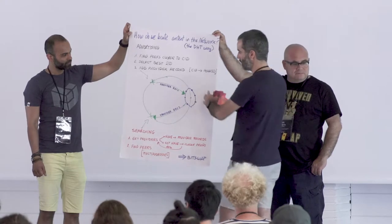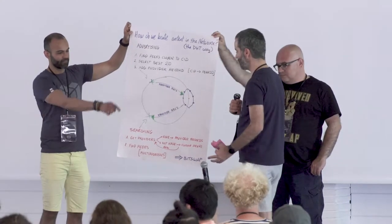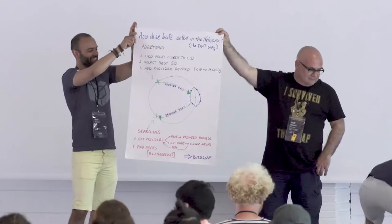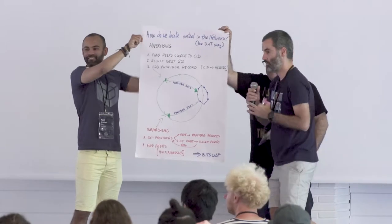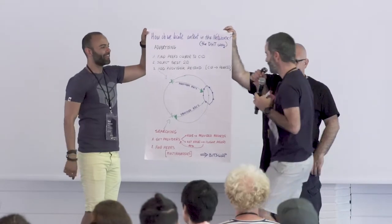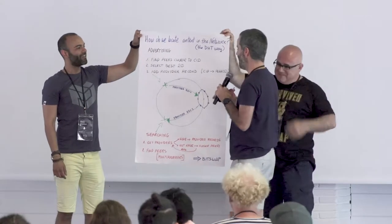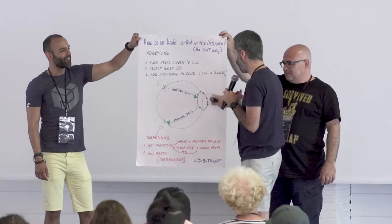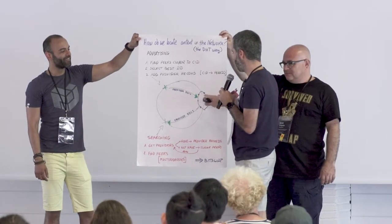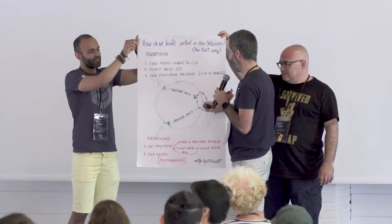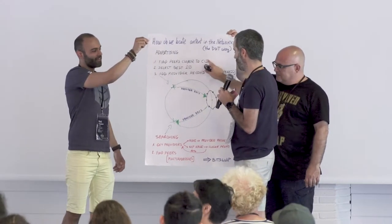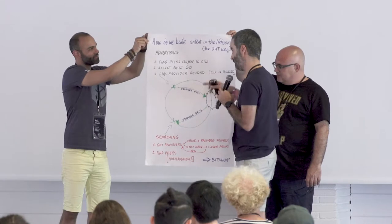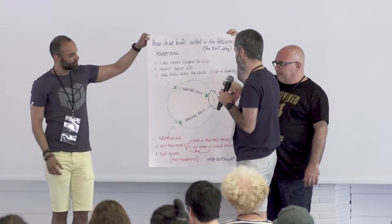We have this little drawing here that explains a little bit about what happens. On the advertising side, we send the provider records to all the neighbors of the zone that we want — that's basically the CID and the peer ID — the peers that are closer to the CID zone.